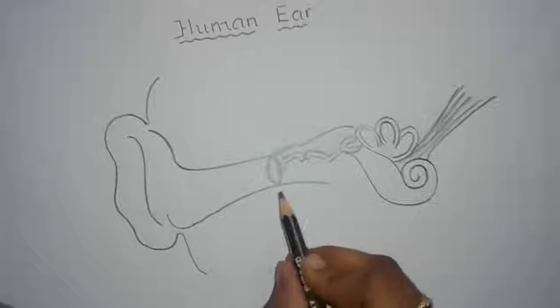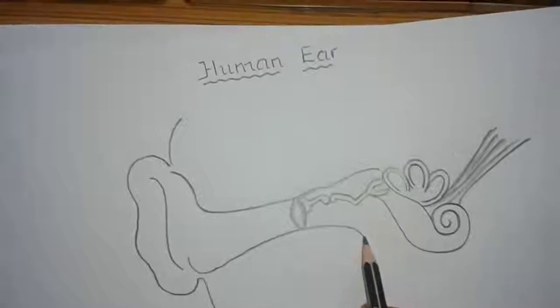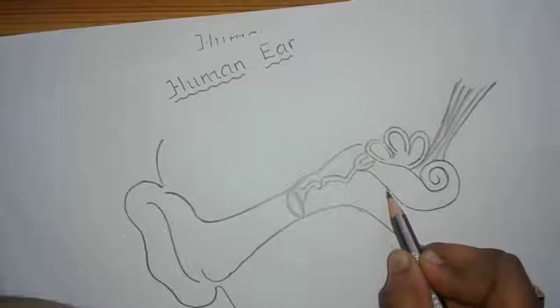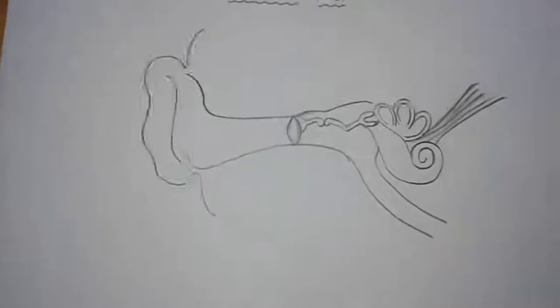Now children, to maintain the air pressure on either side of the tympanum there is a tube called eustachian tube. Draw the eustachian tube. This is the structure of the ear.